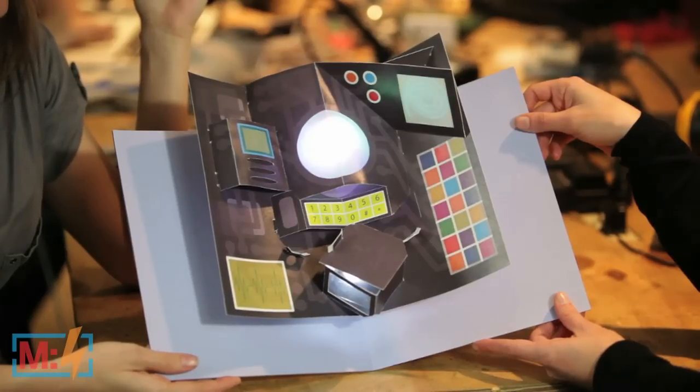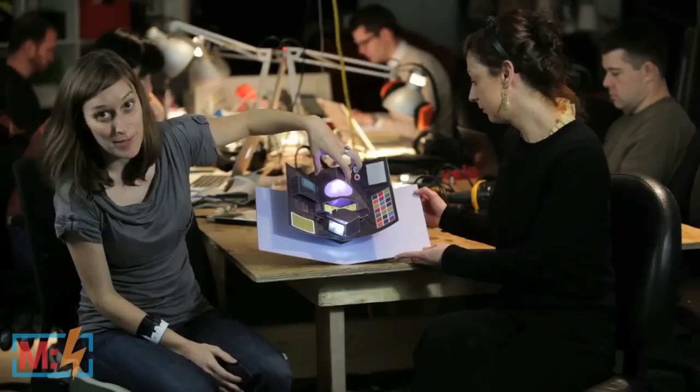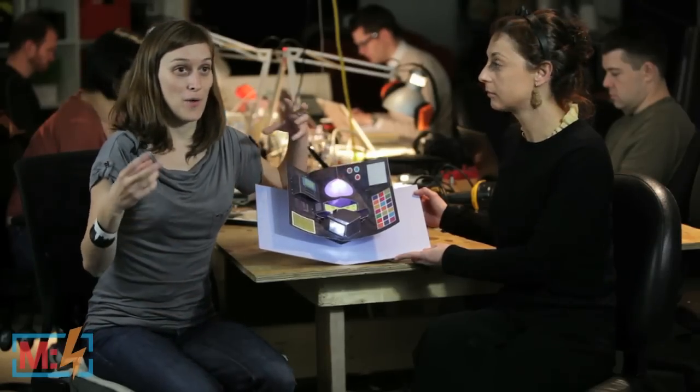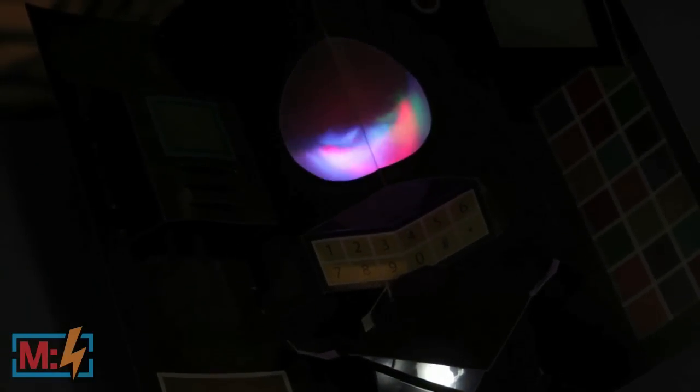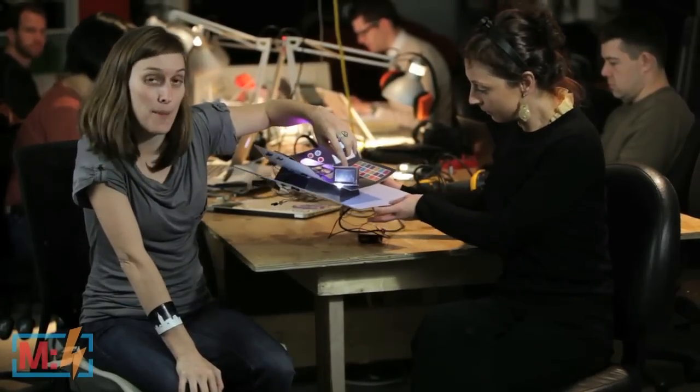So we have a couple different areas in the book. There's some EL wire up here that we have. This is an RGB LED, and we sort of recalled Penny having some sort of radar in her book, so this is our interpretation of a radar.